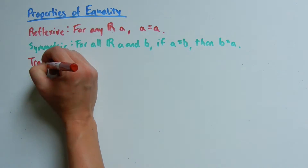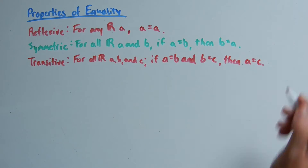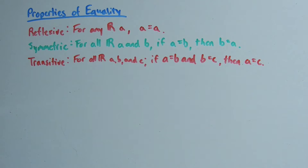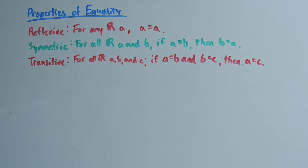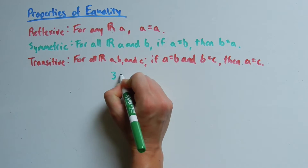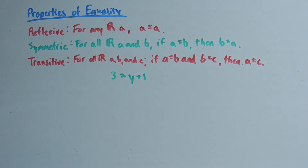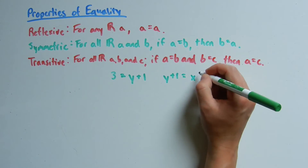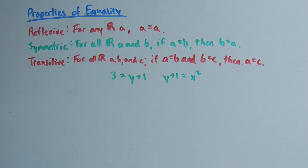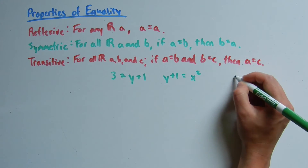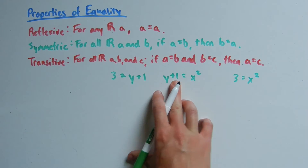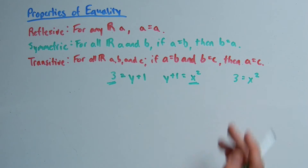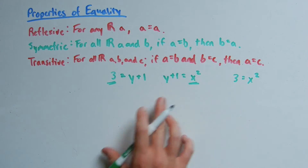Next is the transitive property. The transitive property says for all real numbers a, b, and c, if a is equal to b and b is equal to c, then a is equal to c. For example, if a equals 3 and b equals y plus 1 and y plus 1 equals c, where c equals x squared, then by the transitive property 3 equals x squared. So if a equals b and b equals c, then a equals c.